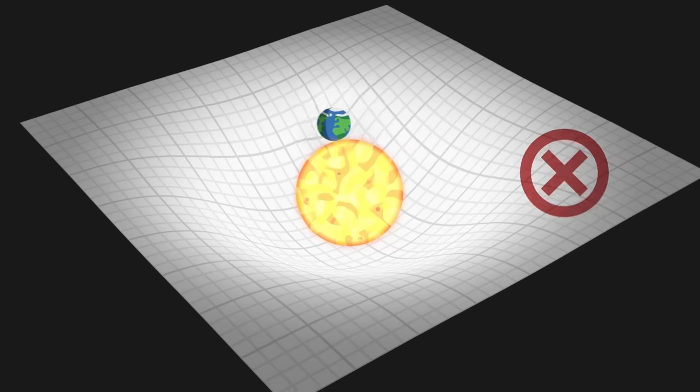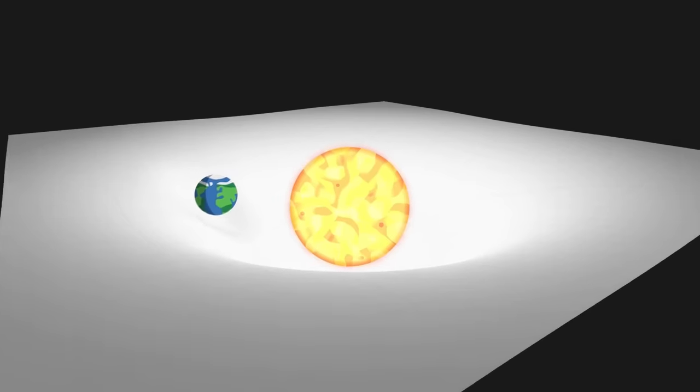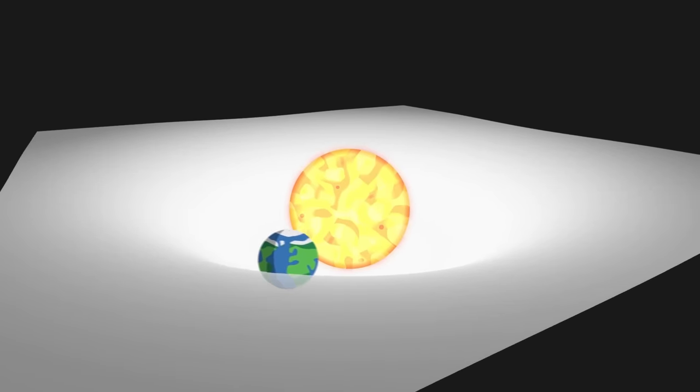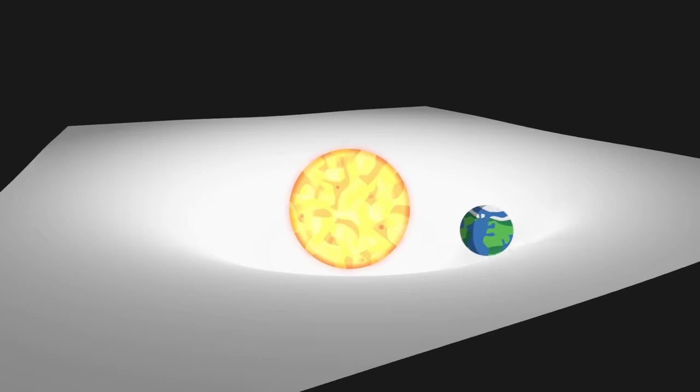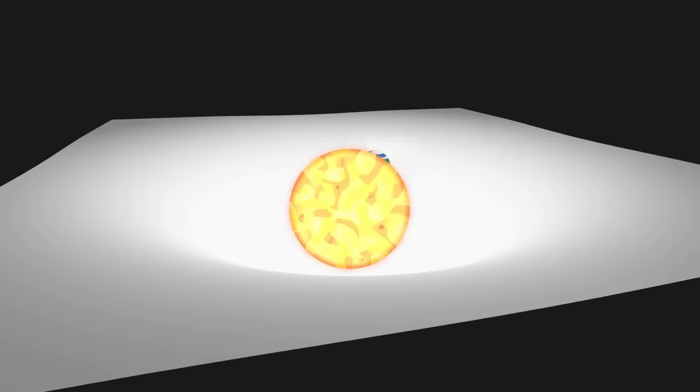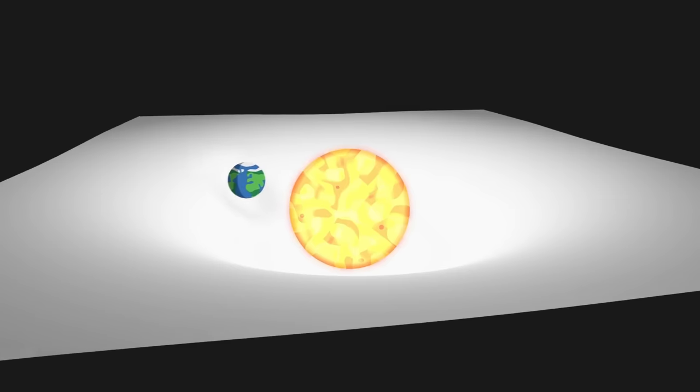To begin with, the image of the elastic sheet seems to indicate that objects are placed on space-time, like marbles, while in reality, space-time is the fabric of the universe that contains them.